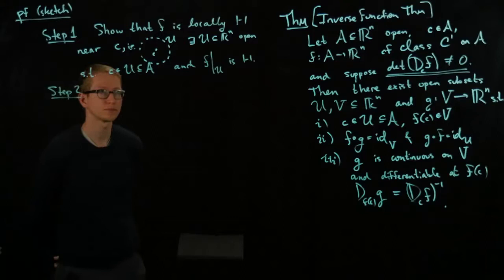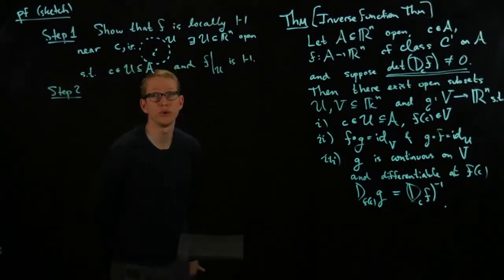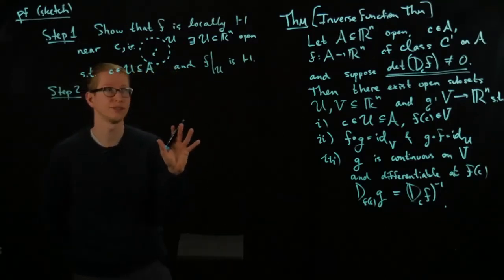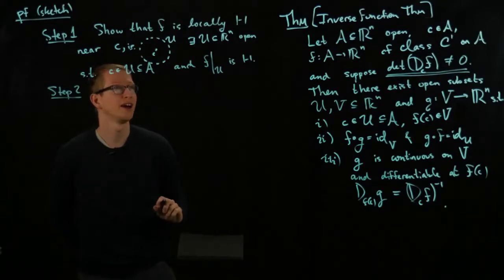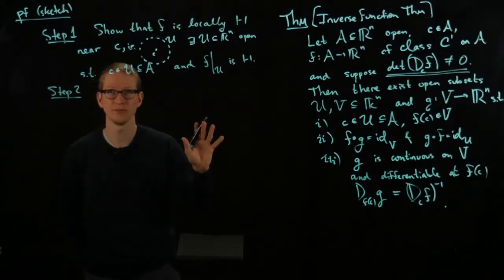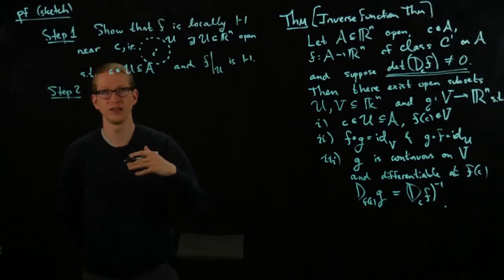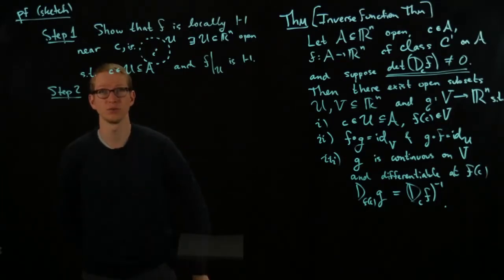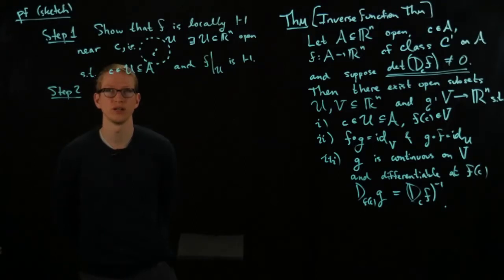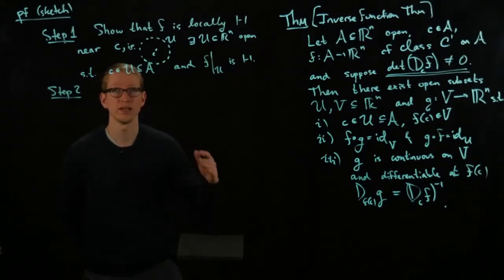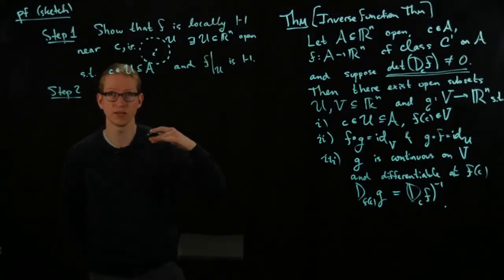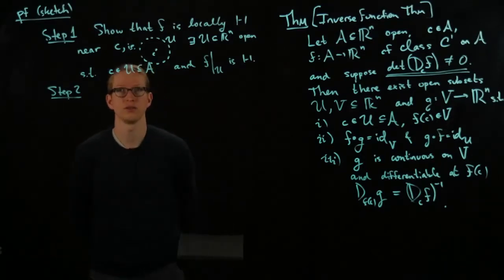The second step is, by the way, we should make sure why this is even important in the first place. If F wasn't one to one in some neighborhood, then this would mean that we can't even construct an inverse because even as a function, an inverse wouldn't exist. So we have to make sure that F is one to one on some domain so that we at least have a bijection from that domain to the range.